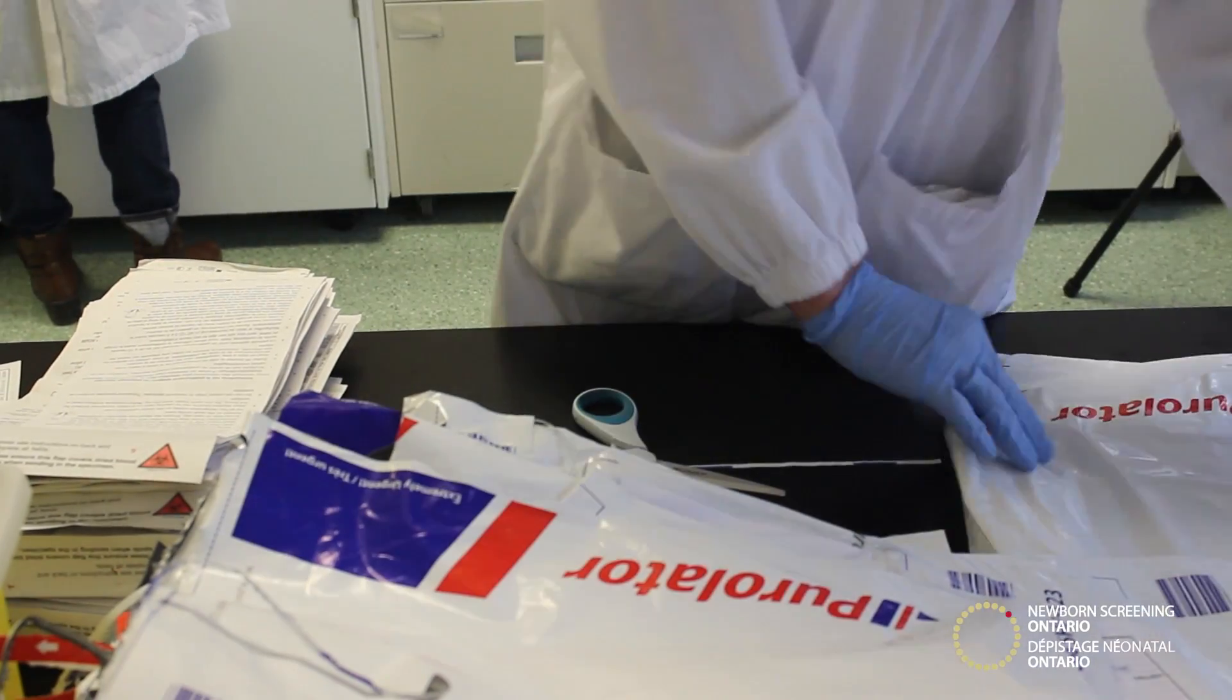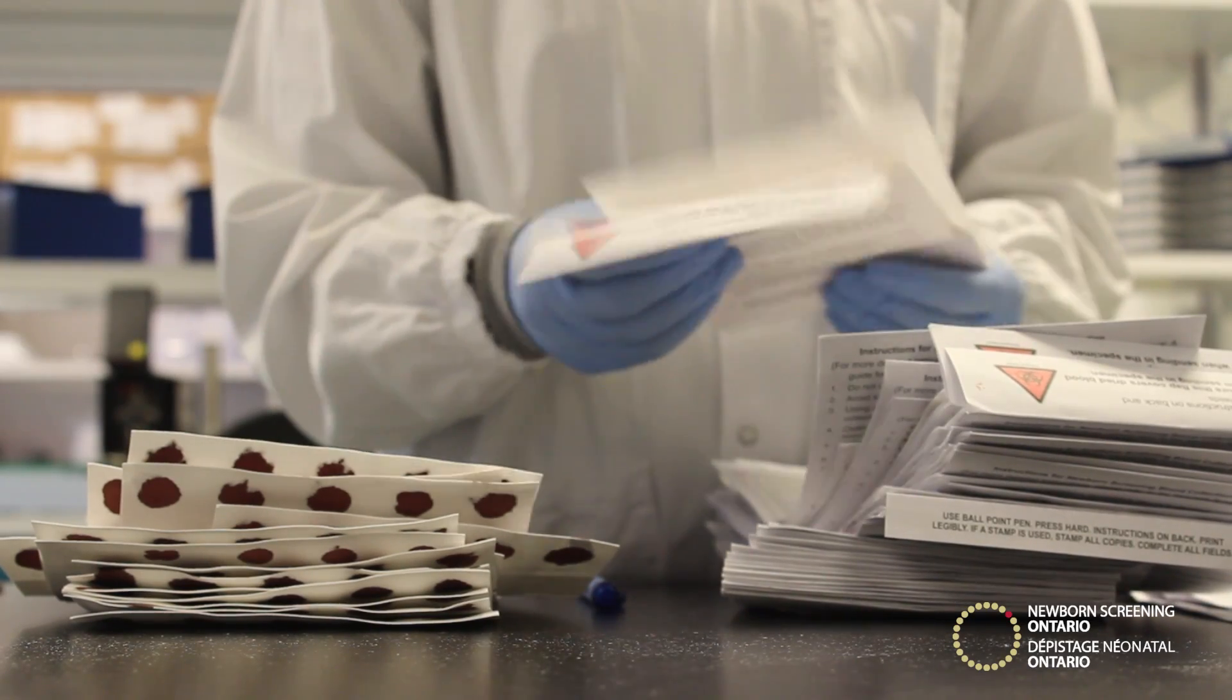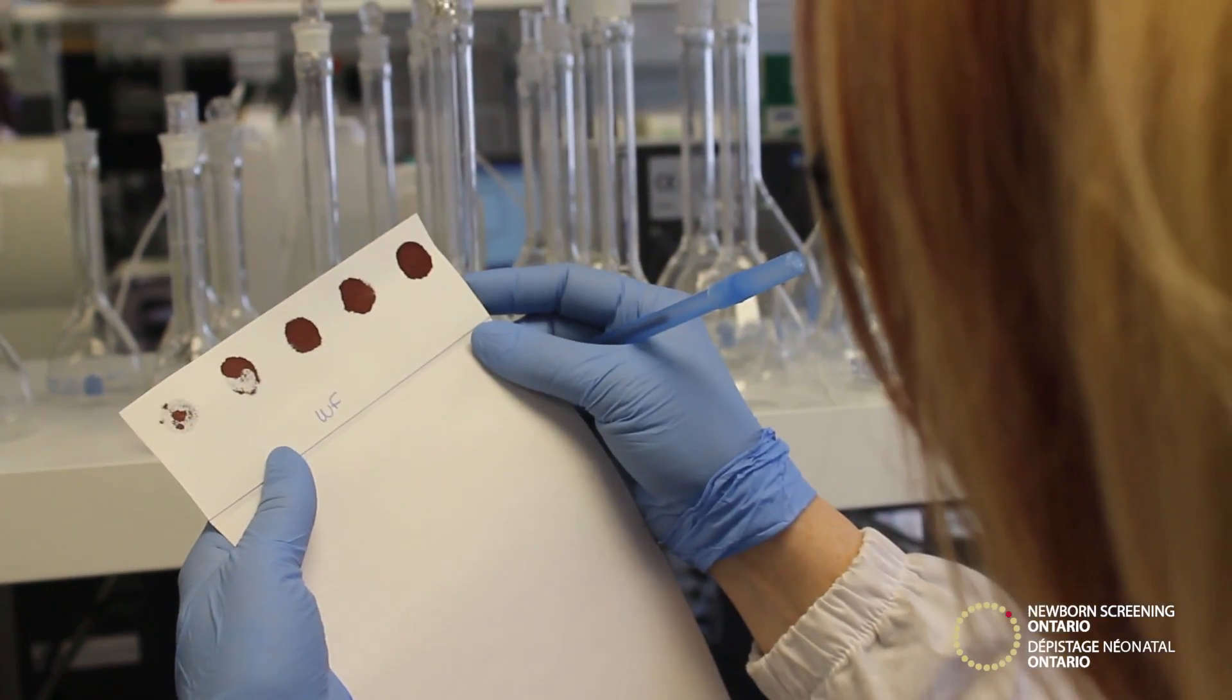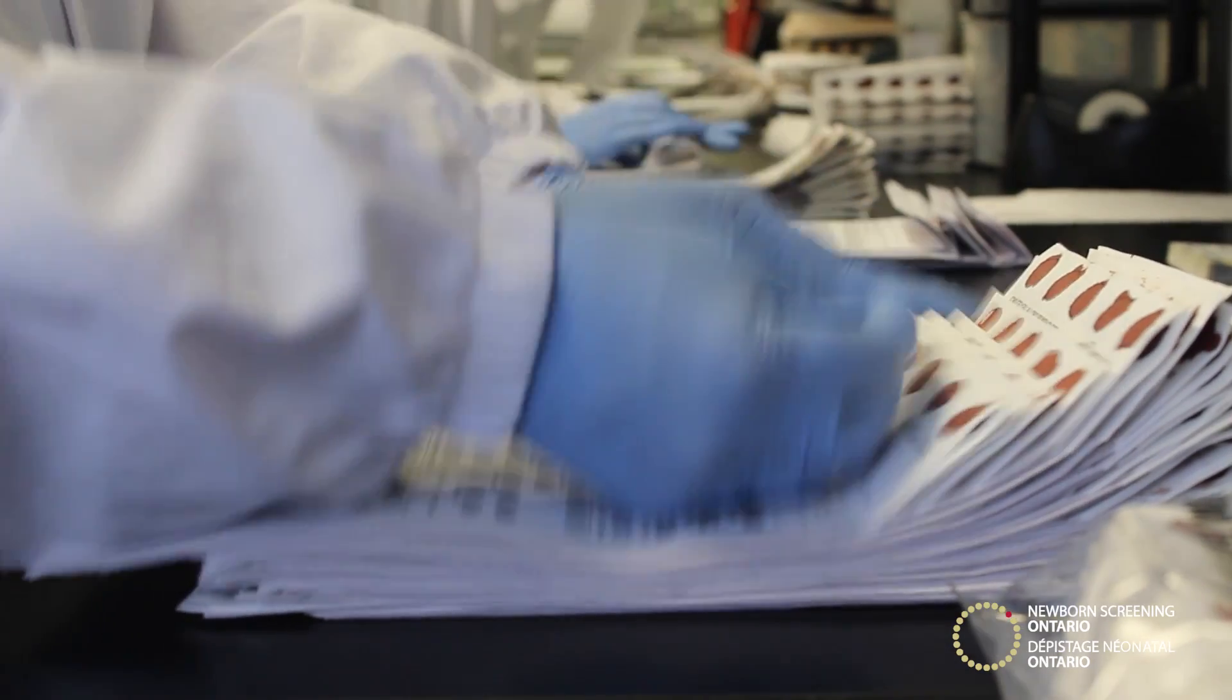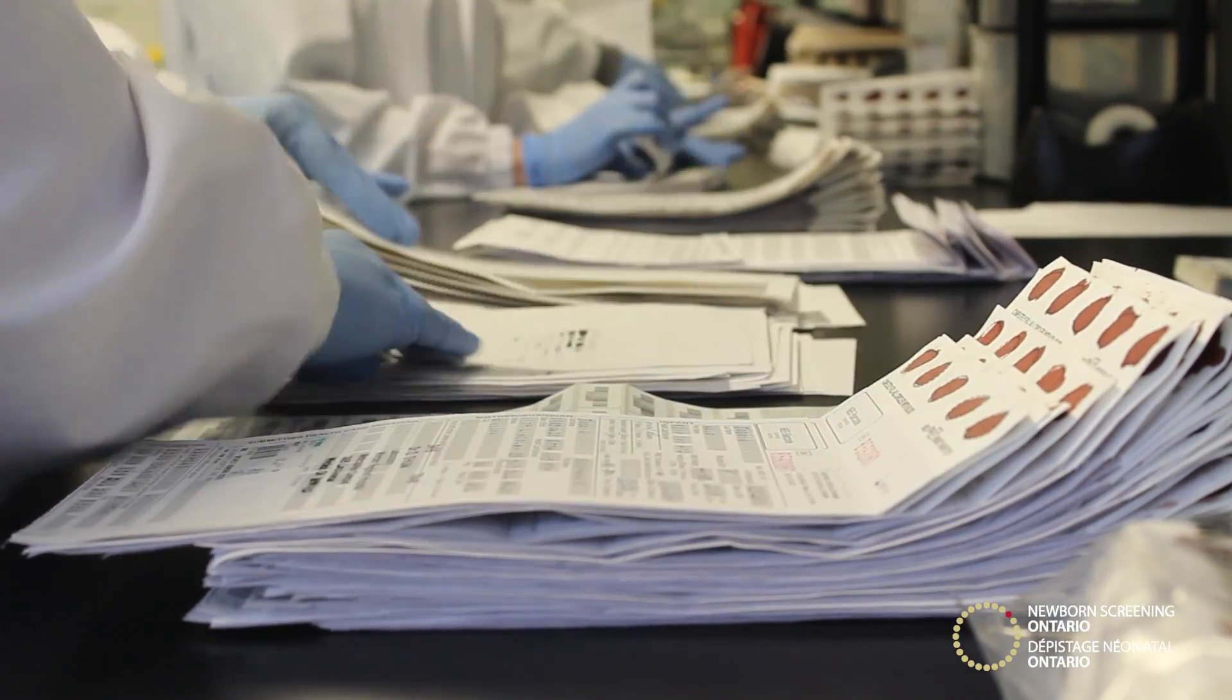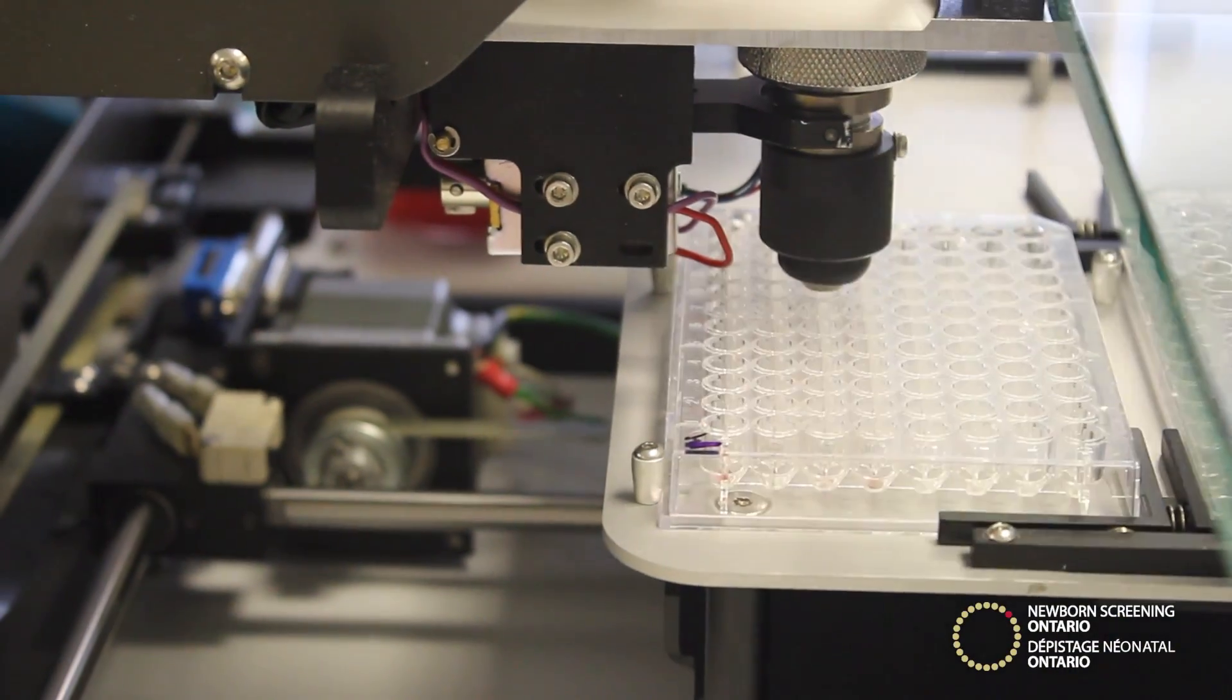The process starts with the arrival of the sample, where laboratory technicians check for test quality and that the requisition form is complete. A unique barcode is applied to each sample and requisition form. If a sample is not of high enough quality for accurate testing, a new sample is requested.